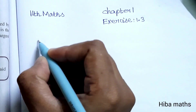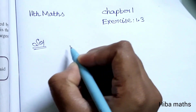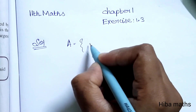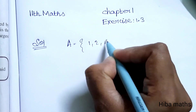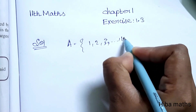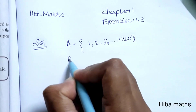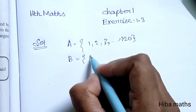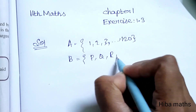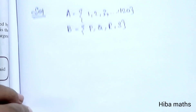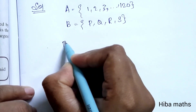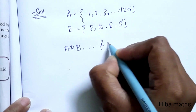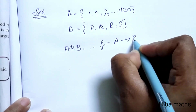In the solution, we have two sets. A is the set of students: {1, 2, 3, ... up to 120}. B is the set of 4 sections: {P, Q, R, S}.